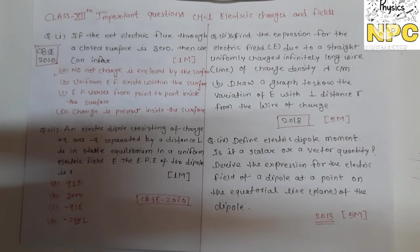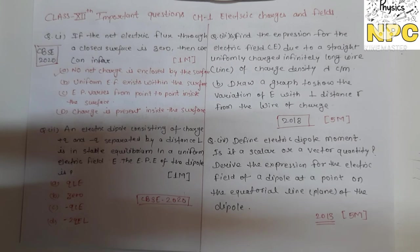So question number one is correct, because if electric flux is zero, then there are no charges inside the surface. So net charge enclosed by the surface is zero.